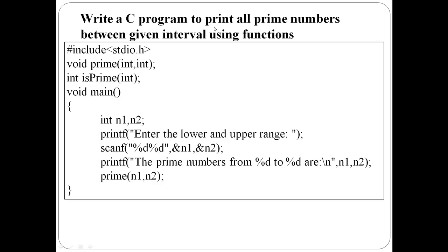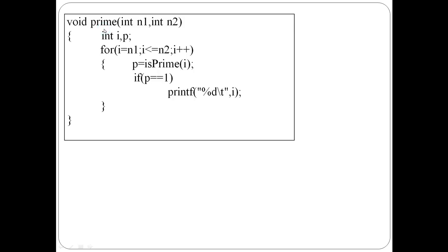Next: write a C program to print all prime numbers between a given interval using functions. Two values n1 and n2 are entered as the interval limits, and all prime numbers between them are displayed. A user-defined function is used. It takes two integer arguments: lower limit and upper limit.